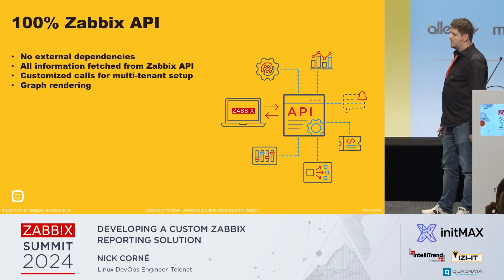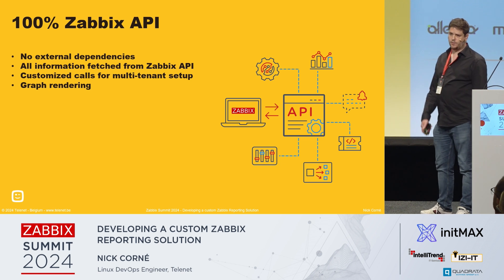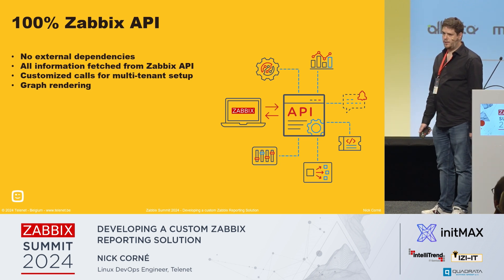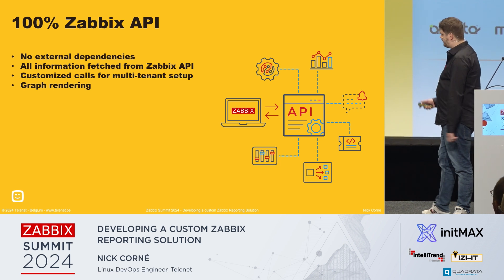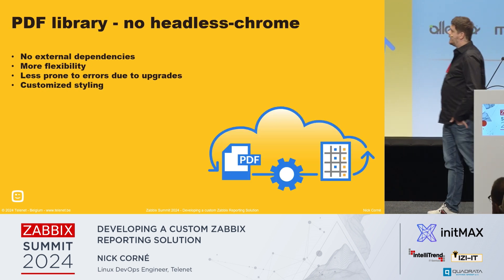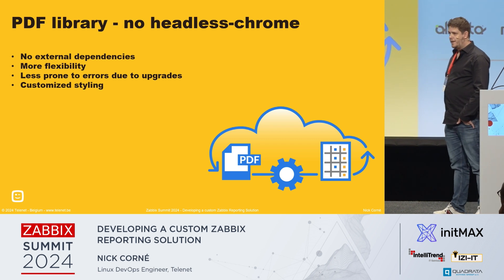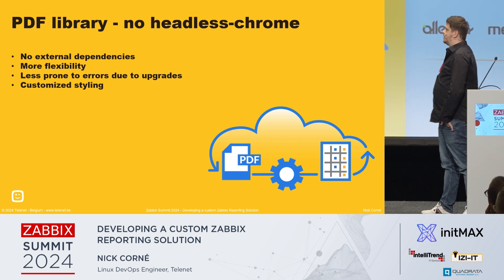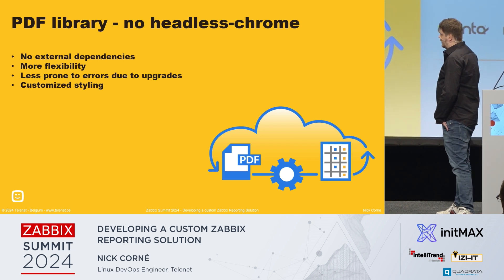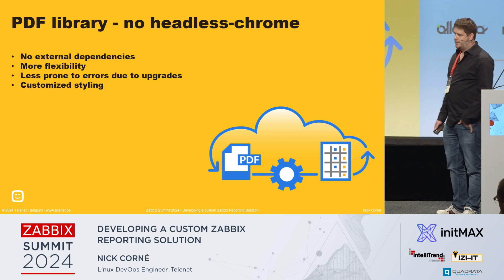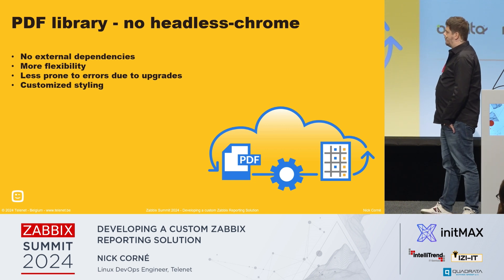Also, the graph rendering uses Zabbix directly. If you go to latest data and click on an item and graph it — that's the same mechanism we use to fetch our graphs. The next big thing was we didn't want any headless Chrome. Avenue used that and there were a lot of issues — every time there was an upgrade some stuff broke, the styling broke, and reporting took a long time. So that was a no-go for us.